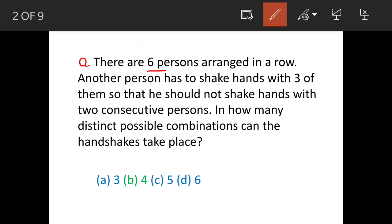There are six persons arranged in a row. Another person has to shake hands with three of them at a time so that he should not shake hands with two consecutive persons. So how many ways he can shake hands and the answer is four.